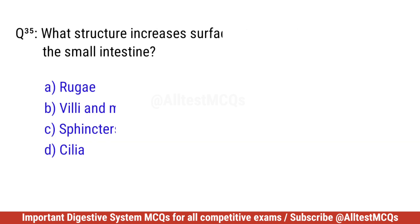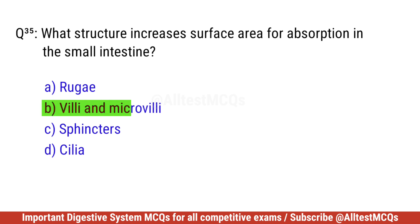Question number thirty-five. What structure increases surface area for absorption in the small intestine? Right option is B. Villi and microvilli.